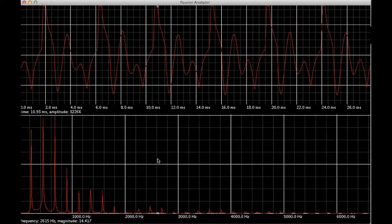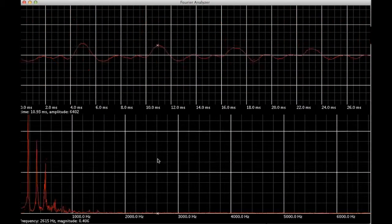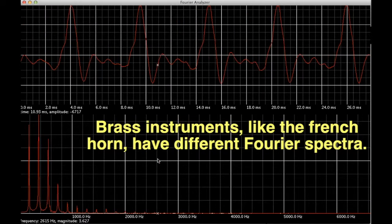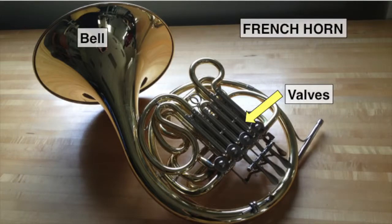Let's look at the Fourier spectrum for a brass instrument. This is the Fourier spectrum for a French horn. Like the trombone, you can change the pitch of the French horn by changing the length of the pipe. This is done by opening and closing the valves.